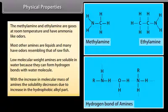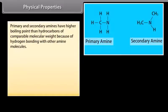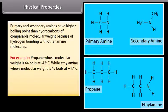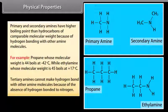Physical properties of amines: Solubility decreases with increase in the hydrophobic alkyl part. Primary and secondary amines have higher boiling points than hydrocarbons of comparable molecular weight because of hydrogen bonding. For example, propane (molecular weight 44) boils at −42°C, while ethylamine (molecular weight 45) boils at +17°C. Tertiary amines cannot form hydrogen bonds with other amine molecules because of the absence of a hydrogen atom bonded to nitrogen.